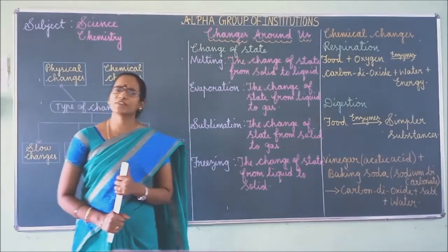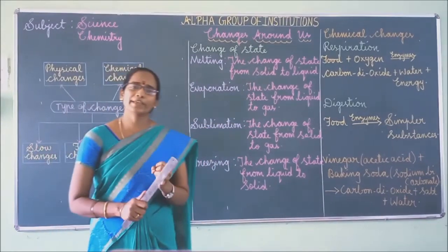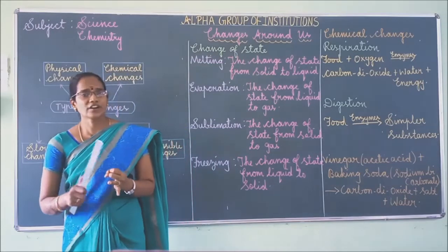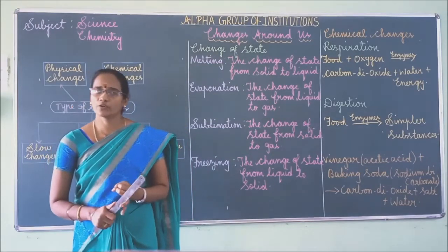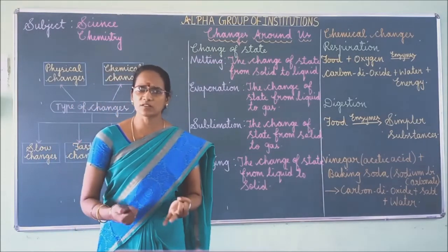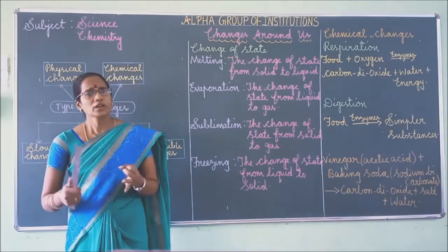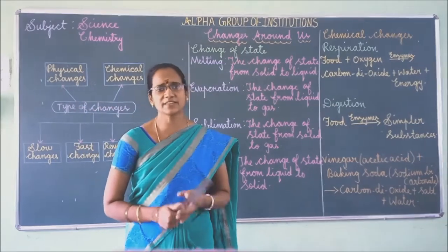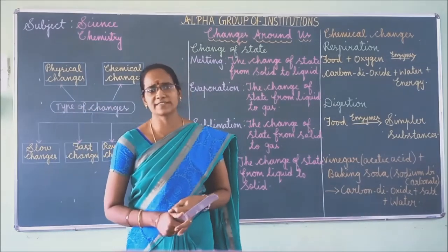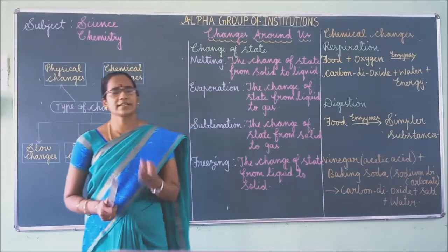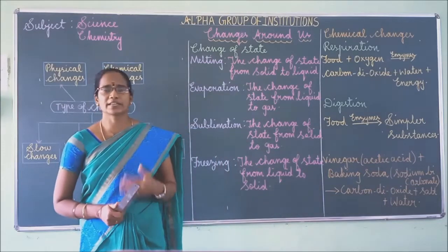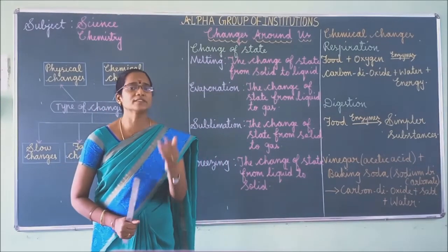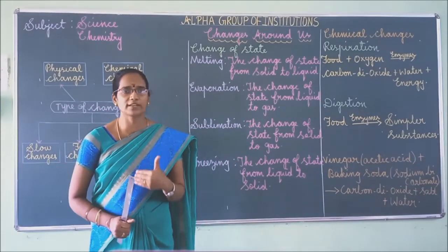Examples of desirable changes: blooming of flowers from bud, ripening of fruits, and change of season — these are also desirable changes. A desirable change means a change useful to us.